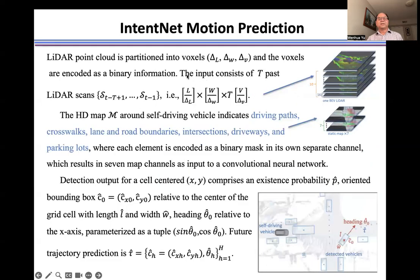IntentNet is used as the first stage in the MultiXNet model. It has two inputs. One is from the LiDAR point cloud.